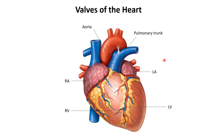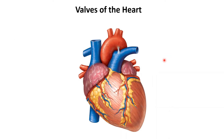We're going to be talking about four valves today: two atrioventricular or AV valves and two semilunar or SL valves. Now these valves are on the inside of the heart and I'm going to have to slice open this heart with this really sharp knife here.